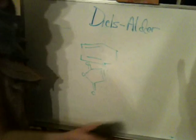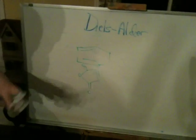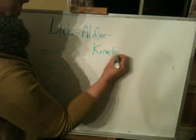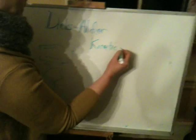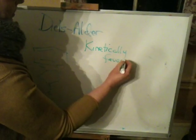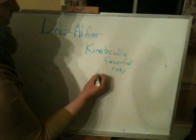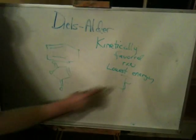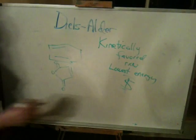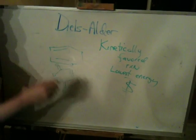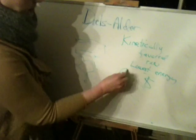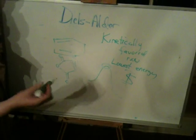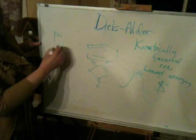So what we're saying is the endo attack is more favorable. Why? The reason the endo attack is considered to be more favorable is because it is considered to be the kinetically favored reaction. This means it is believed to be the lowest energy transition state for the reaction. The Diels-Alder is a one-step process, and we're saying that this approach goes through the lowest energy transition state. The theory is something called pi stacking.